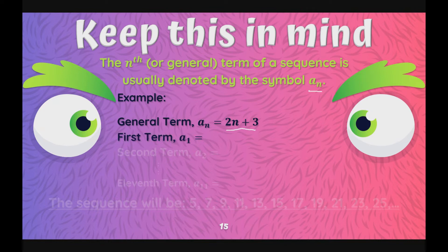to find our first term which is denoted by this symbol and read as a sub 1, papalitan lang natin yung a sub n or yung n sa a sub n ng 1. Ito na po yun. Ganon din dito. Papalitan natin yung n ng 1. So, magiging 2 times 1 plus 3 which is equal to 2 times 1, 2 plus 3 which is equal to 5. Our first term or our a sub 1 is 5.